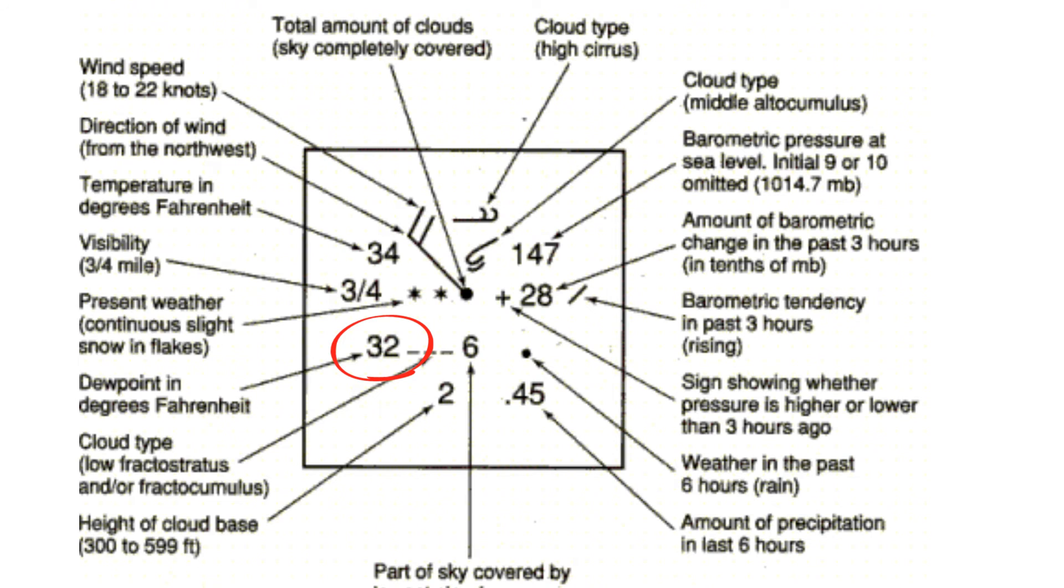Next you have the dew point. The dew point is a measure of the temperature in which the atmosphere is saturated. Cooler air holds less moisture than warm air. The closer the temperature and the dew point, the greater the relative humidity. The opposite, the larger the spread, the less the relative humidity.